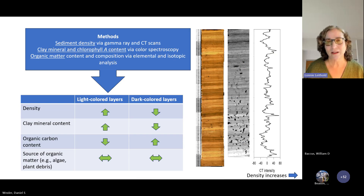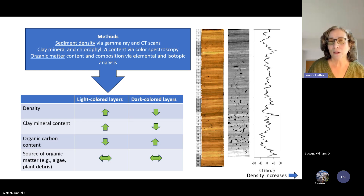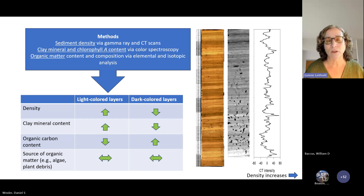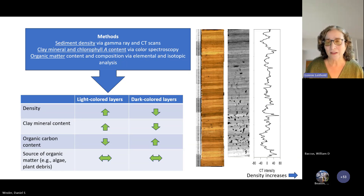We analyzed these darker and lighter bands. We looked at sediment density via gamma rays and did a CT scan. We looked at color spectroscopy to examine clay minerals and chlorophyll A content, and we looked at the organic matter. What we discovered was that the lighter color layers are denser — they have more clay minerals and a lower organic carbon content — but the source of the organic matter is about the same in both the lighter and darker layers.